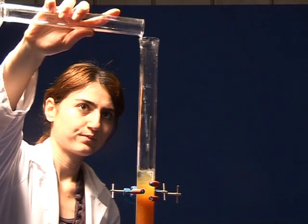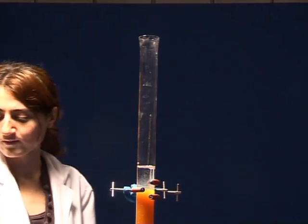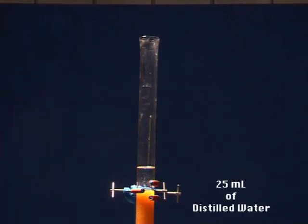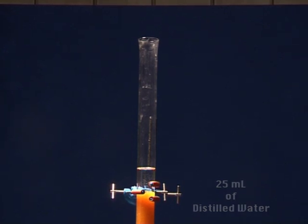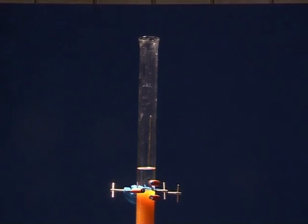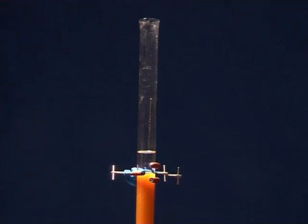When nearly all of the distilled water has flown into the column, add another 25 milliliters of distilled water to the column. This should wash the remaining tap water into the Erlenmeyer.